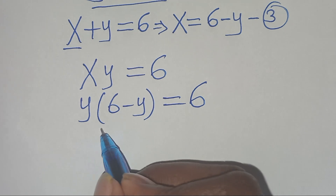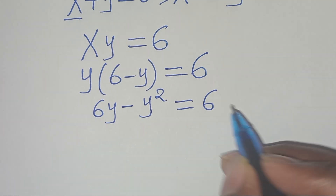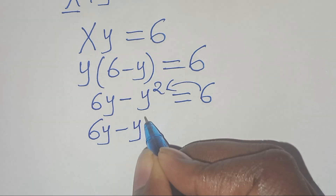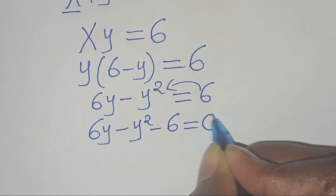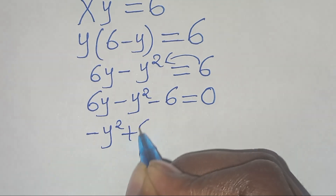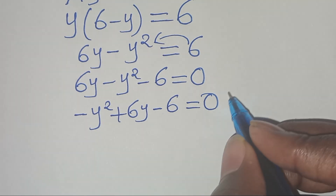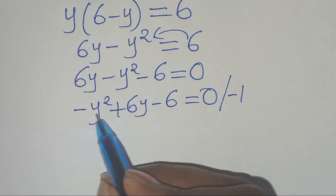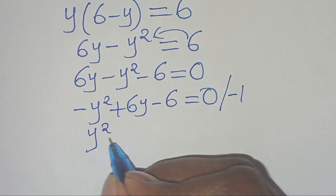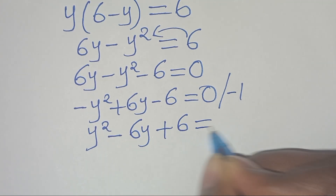Expanding: 6 times y is 6y, minus y times y is y squared, and this equals 6. Taking 6 to the left-hand side, we have 6y minus y squared minus 6 equals 0. Rearranging: minus y squared plus 6y minus 6 equals 0. Dividing both sides by minus 1 gives us y squared minus 6y plus 6 equals 0.